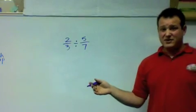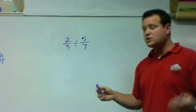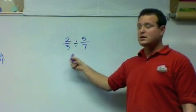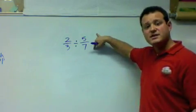We never divide by fractions. Ever. Instead, what we do is we multiply the first by the reciprocal, which is a flipped fraction, of the second.